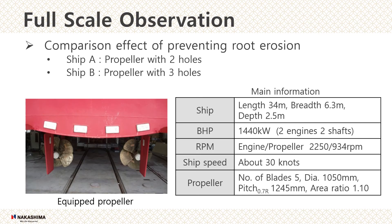This slide shows the full-scale observation conditions. In this experiment, the same types of propeller were installed on two high-speed passenger ships, ship A and ship B. These ships are the same type and both operate on the same route. To compare the effect of suppressing root erosion by two anti-cavitation holes versus three, ship A was equipped with the propeller with two holes and ship B with three holes.